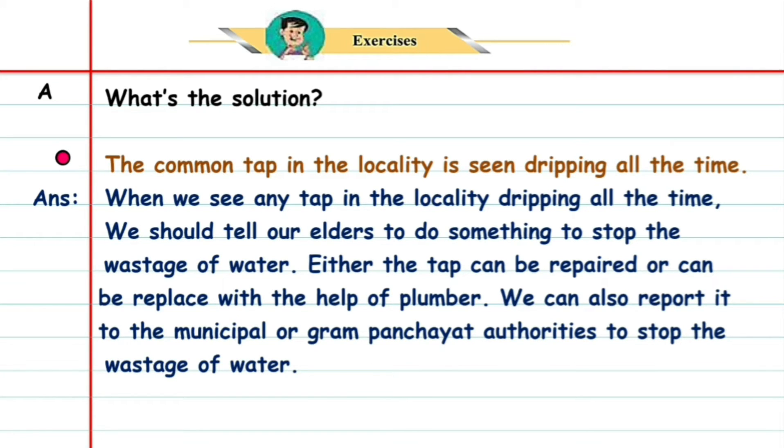We should tell our elders to do something to stop the wastage of water. Either the tap can be repaired or can be replaced with the help of a plumber. We can also report it to the municipal or gram panchayat authorities to stop the wastage of water in the locality.